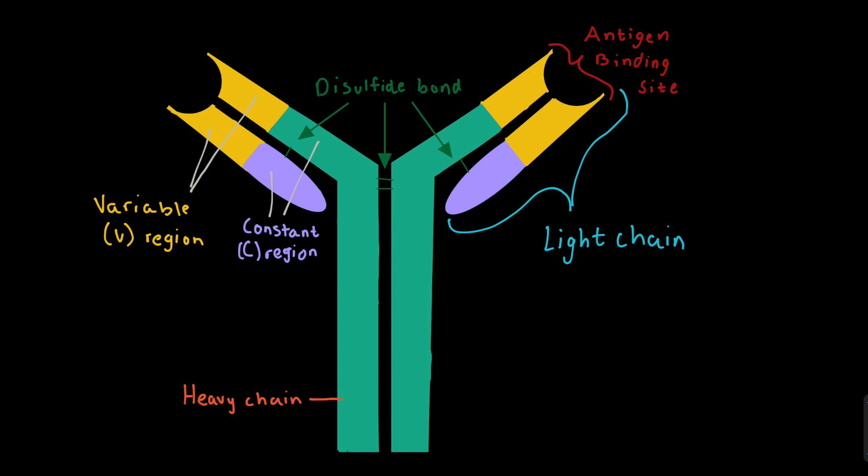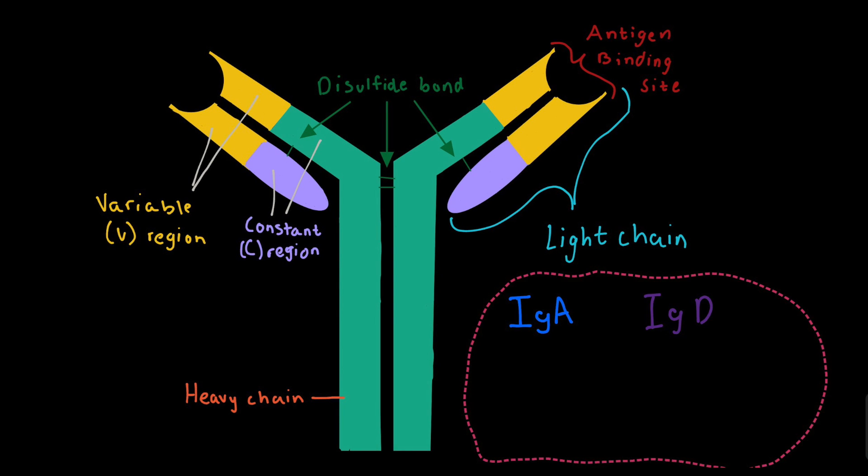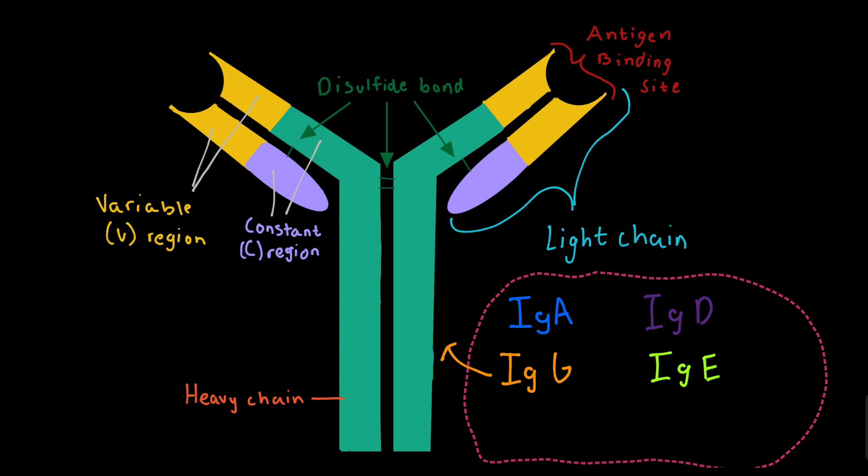There are five classes of antibodies: immunoglobulin alpha, immunoglobulin delta, immunoglobulin epsilon, immunoglobulin gamma, and finally immunoglobulin mu.